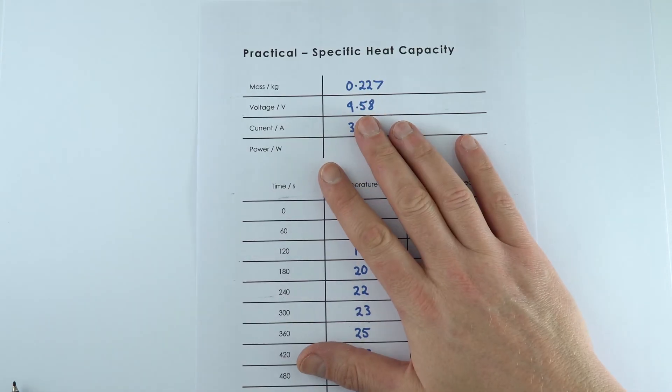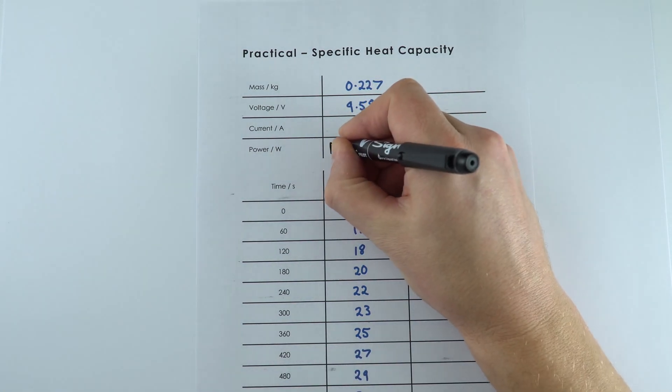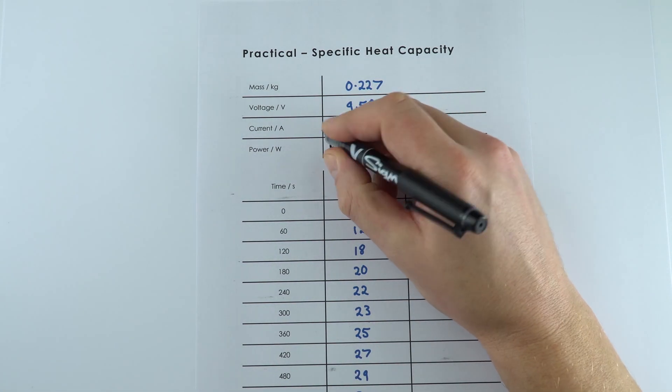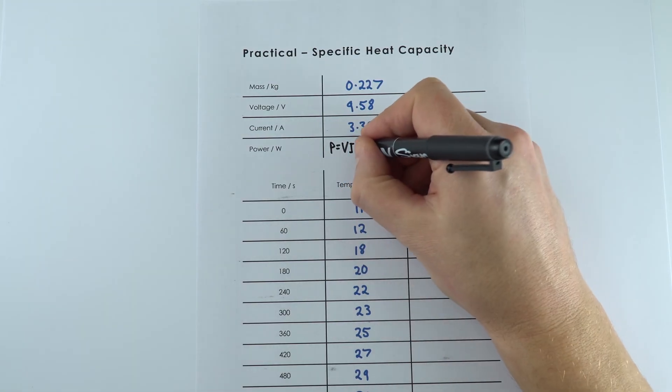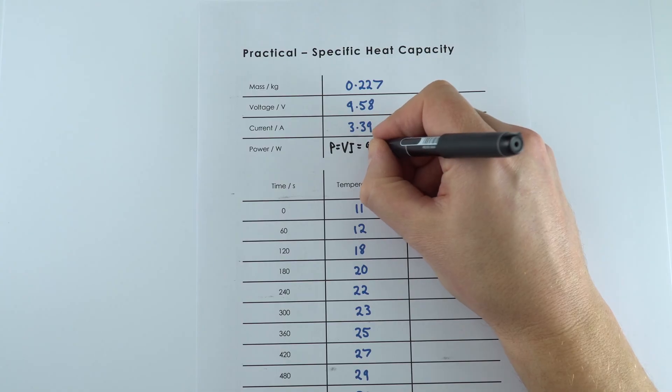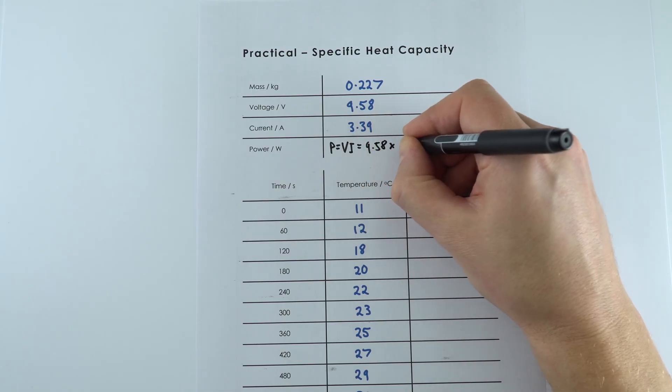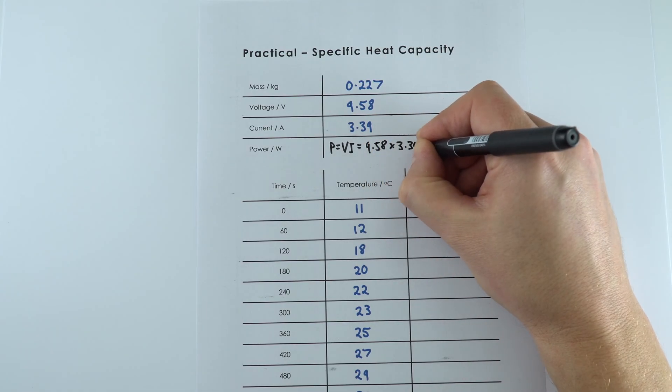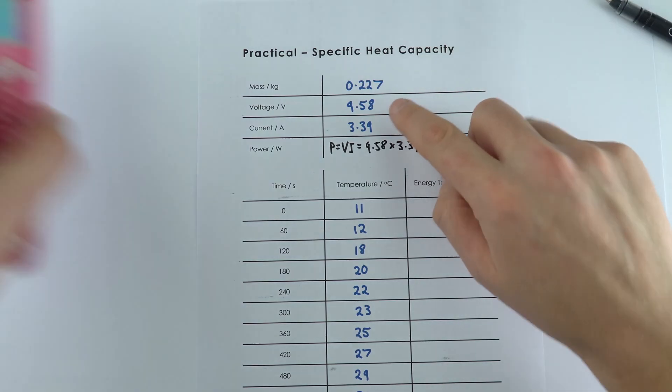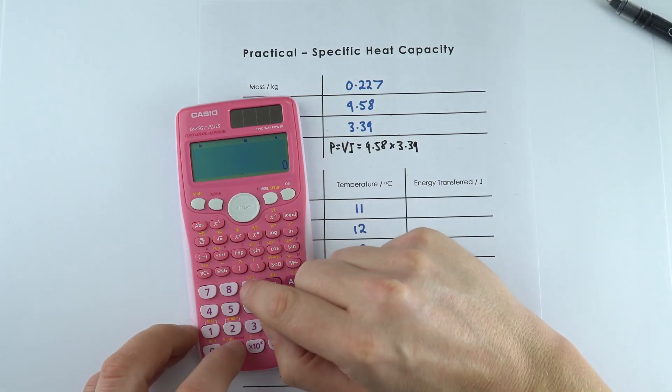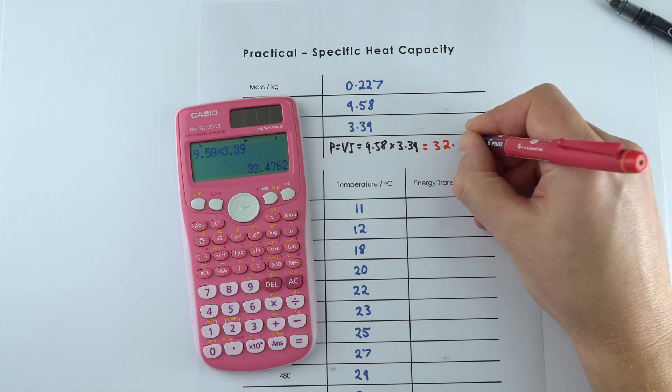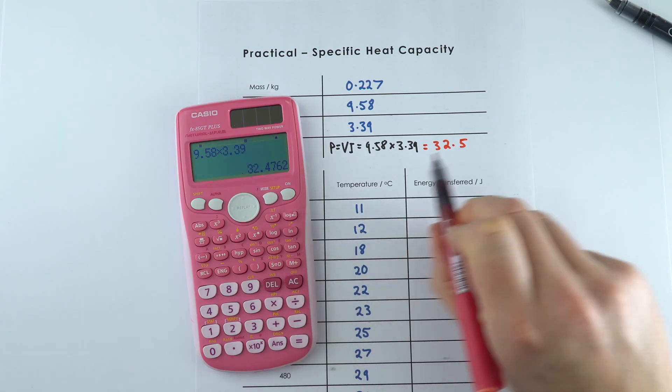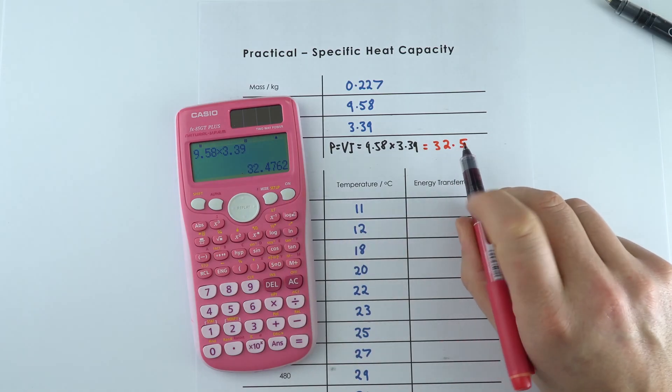Now the first thing we're going to do is work out the power. The power transferred is equal to the voltage or the potential difference multiplied by the current. So in this case it's going to be equal to 9.58 multiplied by 3.39. Those are the values that we took. And if we work this out, this was equal to 32.5 watts.